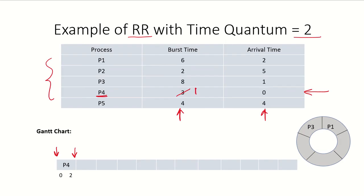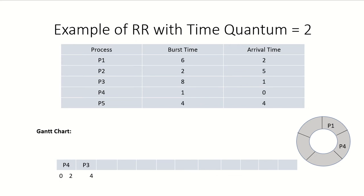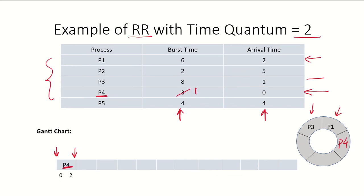Meanwhile, at time one P3 has arrived in the system and joins the ready queue. At time two P1 has also arrived. When P4 completes its execution it also joins the ready queue. Since P3 was at the head of the ready queue, at time two P3 is given the processor by the scheduler.